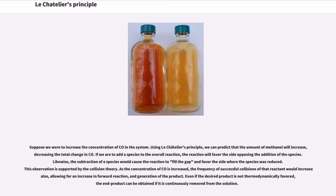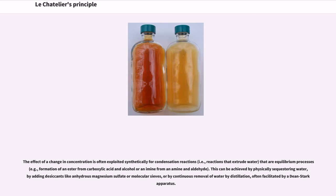Likewise, the subtraction of a species would cause the reaction to fill the gap and favor the side where the species was reduced. This is supported by collision theory: as the concentration of CO increases, the frequency of successful collisions increases, allowing for an increase in forward reaction and generation of the product. Even if the desired product is not thermodynamically favored, the end product can be obtained if it is continuously removed from the solution. This effect is often exploited for condensation reactions — reactions that extrude water — such as formation of an ester from a carboxylic acid and alcohol. This can be achieved by adding desiccants like anhydrous magnesium sulfate or molecular sieves, or by continuous removal of water by distillation, often facilitated by a Dean-Stark apparatus.